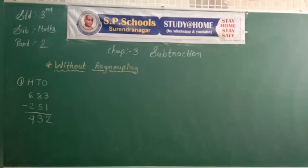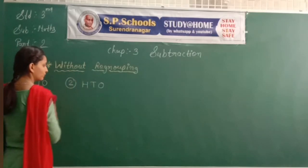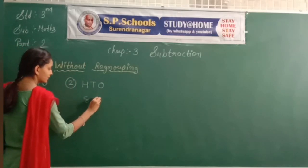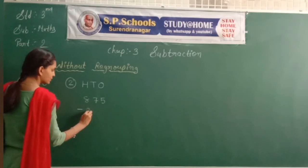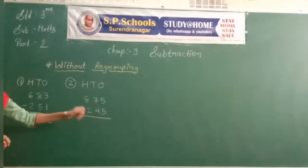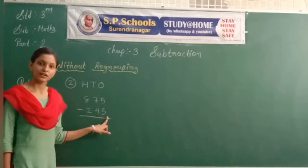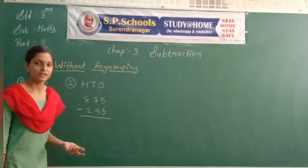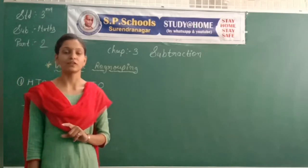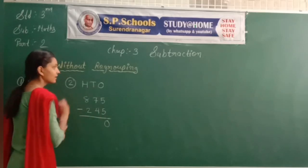Okay students. The next sum: 875 minus 245. Once I say counting — 5 minus 5. Both digits are the same, so 5 minus 5 equals zero.